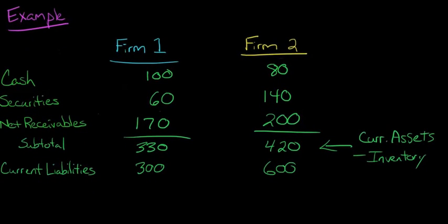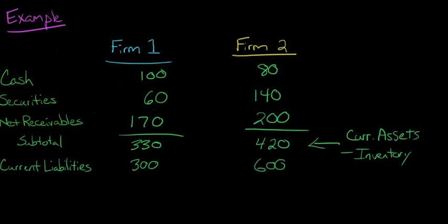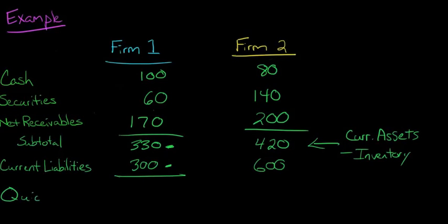So now we just take our subtotal, which is the current assets excluding inventory. We just take that subtotal for firm 1 and divide it by the current liabilities for firm 1. That's going to give us our quick ratio. So our quick ratio for firm 1 is going to be 1.1.